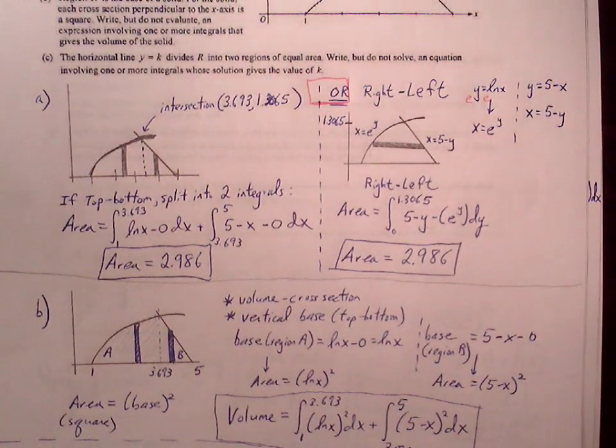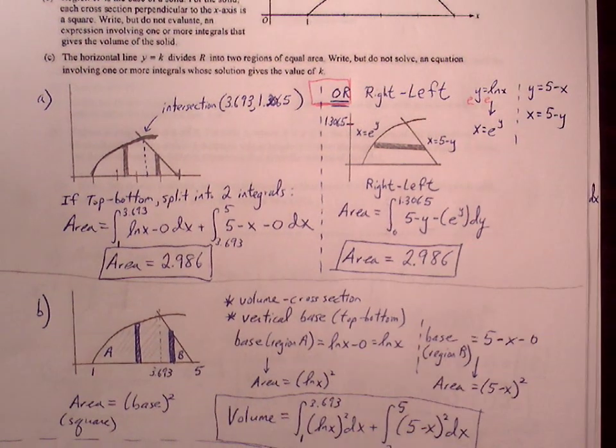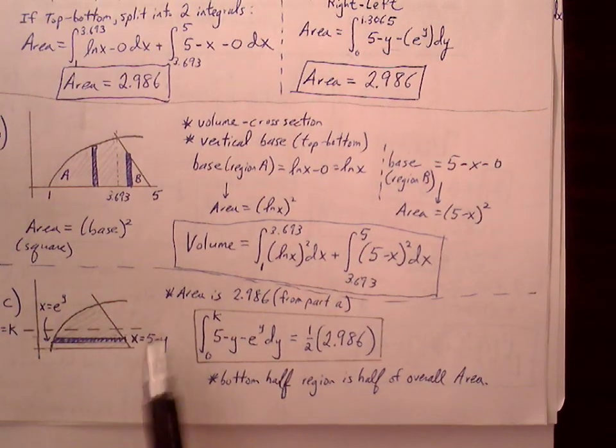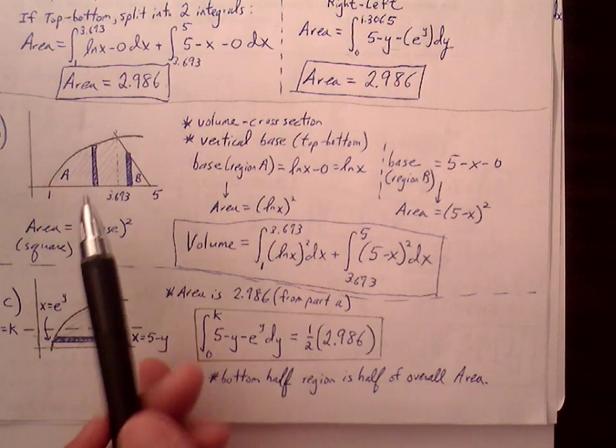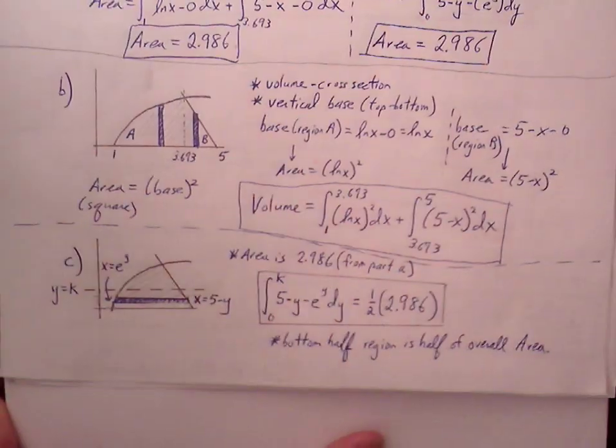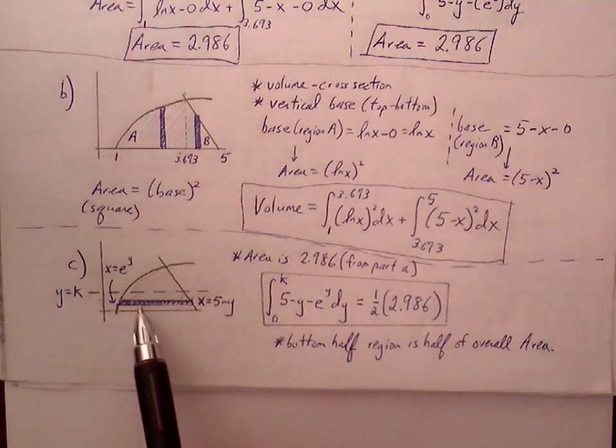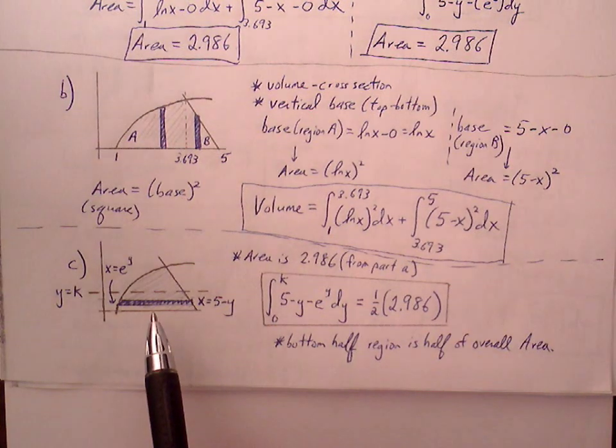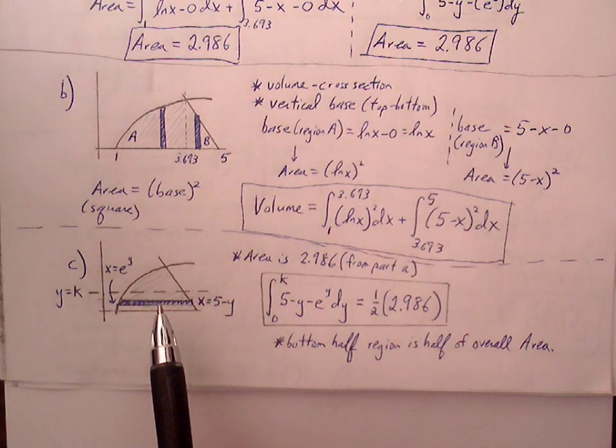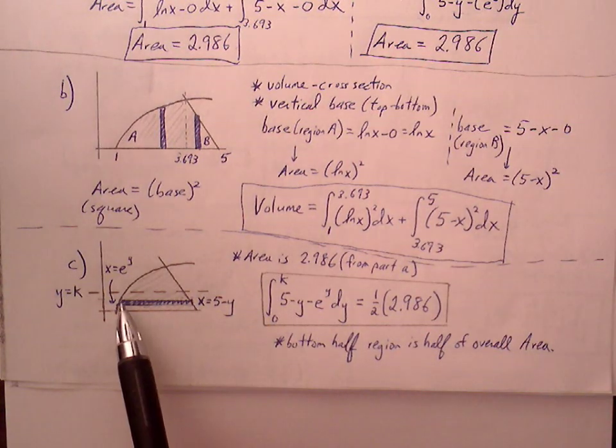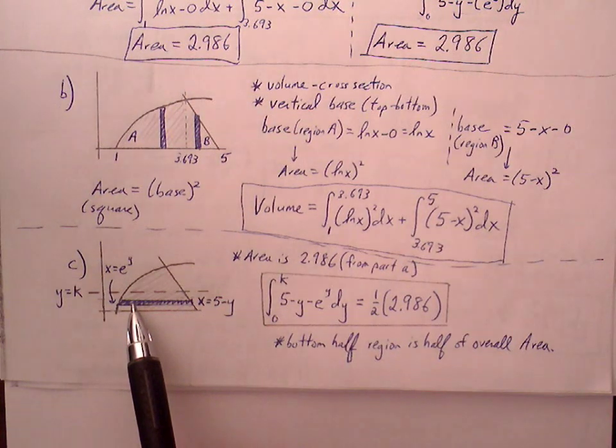Part C: The horizontal line y equals K divides region R into two regions of equal area. Write but do not solve an equation involving one or more integrals whose solution gives the value of K. Here's our region R. We found from part A that the area was 2.986. We have a horizontal line that is going to divide these two regions into equal halves. I'll indicate a dotted line and call that y equals K. We just have to set up an integral that will allow us to represent something that can be solved in terms of K, but we don't have to solve it.